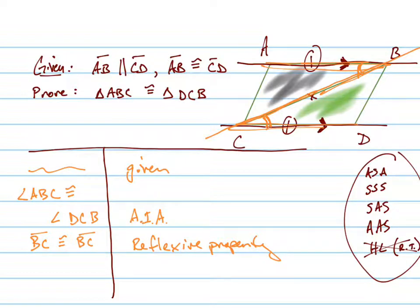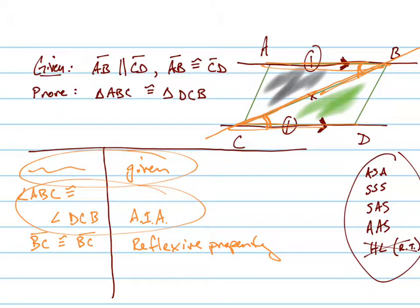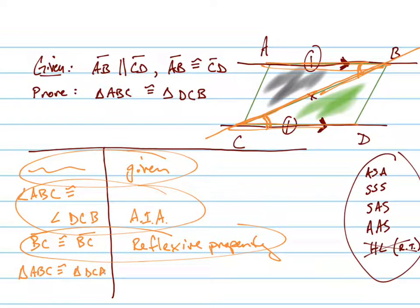Now we have side, angle, side. We have a side that was given to us at the beginning, an angle that we showed by alternate interior angles, and then another side. So we can state that triangle ABC is congruent to triangle DCB, and that is by side-angle-side. Our side was given, our angle was by the parallel postulate, and our other side was by the reflexive property.